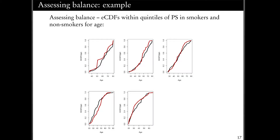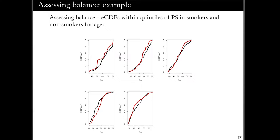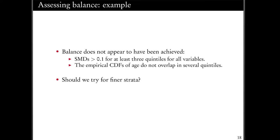We can also look at the empirical CDF plots, though these get harder to assess as we stratify because they're based on smaller numbers and don't give us any idea of variability. I'd say these look better than the plot for our original sample, but especially in the first, fourth, and fifth quintiles, I'm still seeing some areas where we don't have overlap. So I would say I haven't achieved balance — my standardized mean differences are greater than 0.1 for at least three out of five quintiles for every covariate, and the empirical CDFs of age back that up.